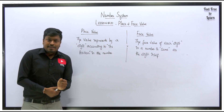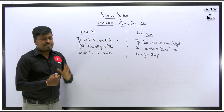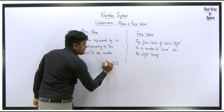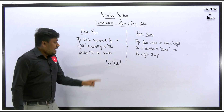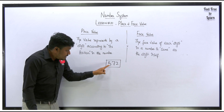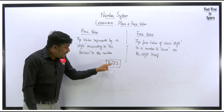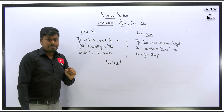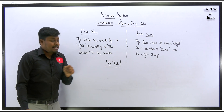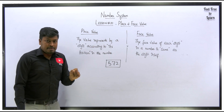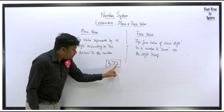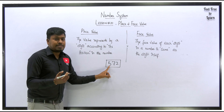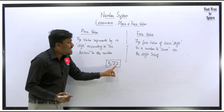Before solving questions, let's learn the definition of place value and face value. Let me take the number 572 as an example. Every digit — digit 5, digit 7, and digit 2 — will have both a place value and a face value. First, let's see what face value means. The face value of each digit in a number — for example, number 2 has a face value, number 7 has a face value, and number 5 has a face value.